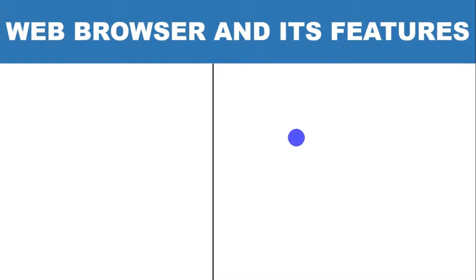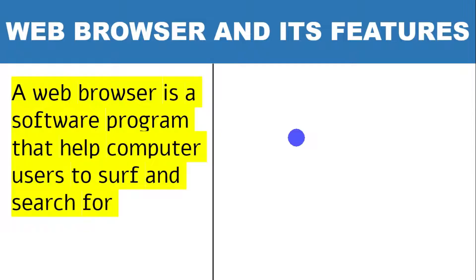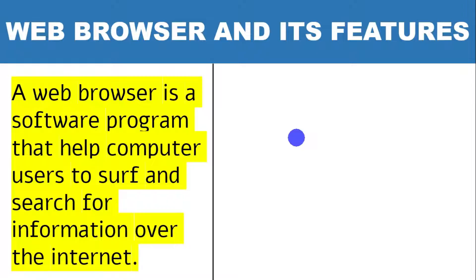Welcome to today's tutorial. In this video we are going to learn about web browsers, examples of web browsers, and their related features or characteristics that help users to control or manipulate browsers on your computer desktop. A web browser is a software program that helps computer users to surf and search for information over the internet. It also helps users to access web pages with related content depending on the search or query entered into the address bar.